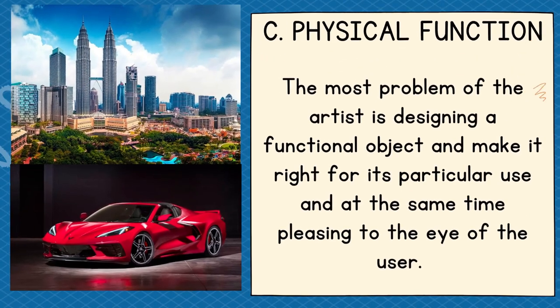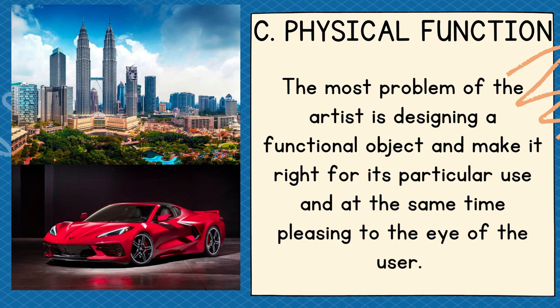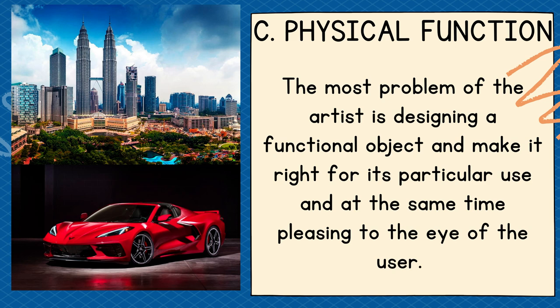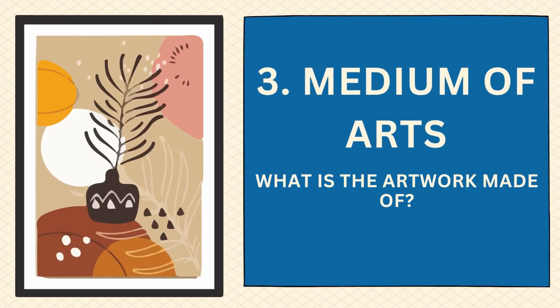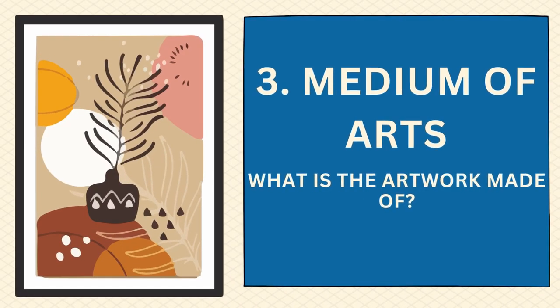The third classification is physical function. The artist's problem is designing a functional object that is right for its particular use and at the same time pleasing to the eye of the user. Functional works of art may be classified as either tools or containers — objects which make our lives physically comfortable. A spoon is a tool; so is a car. A building and a house are containers, as well as a chair and a vase.